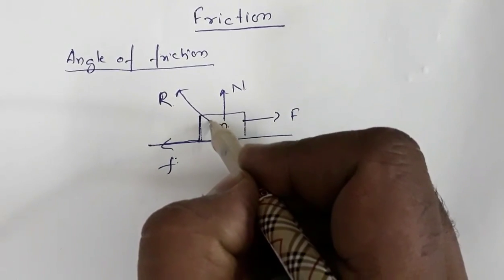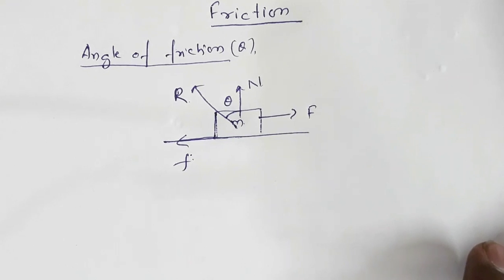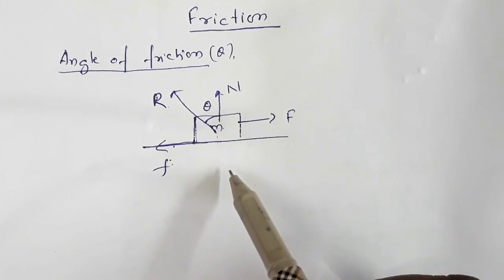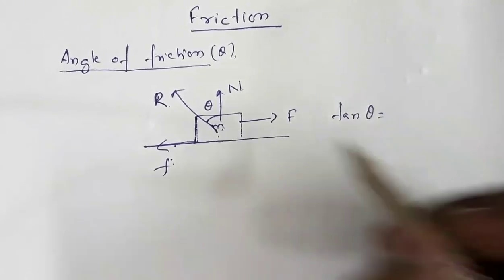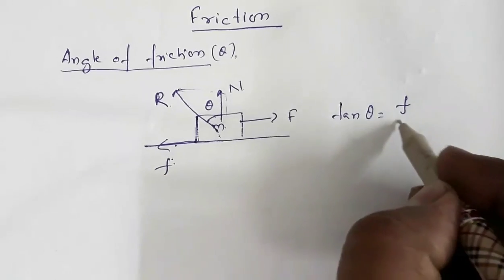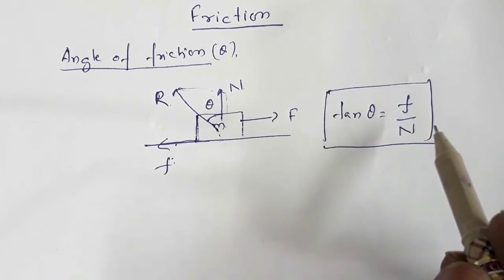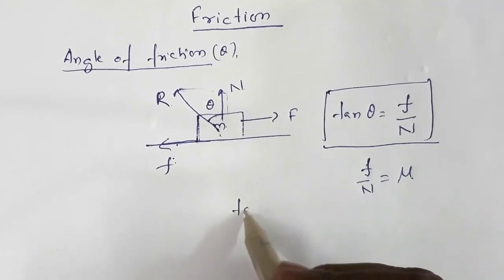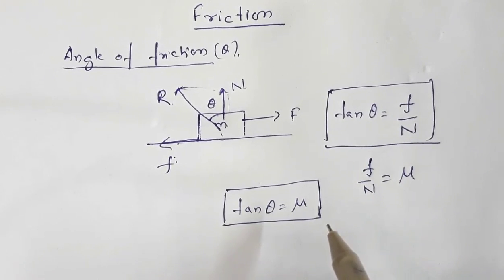The angle of friction is this angle theta. Angle of friction is defined as the angle between the resultant of normal reaction and friction force, and the normal reaction. From the triangle, tan θ equals perpendicular by base, which equals F divided by N. So tangent of angle of friction equals the ratio of friction force to normal reaction. But since F/N equals the coefficient of friction, we have tan θ = μ.